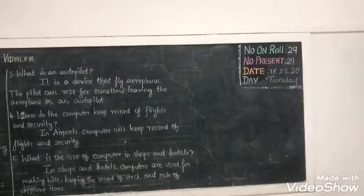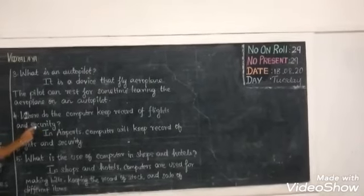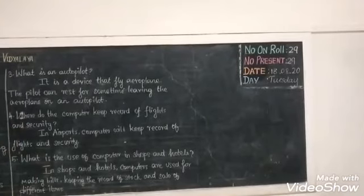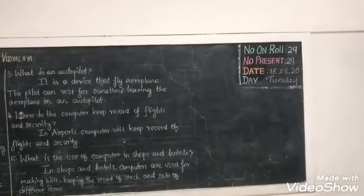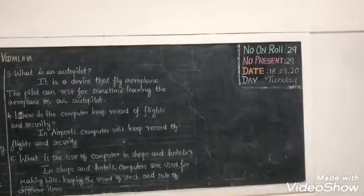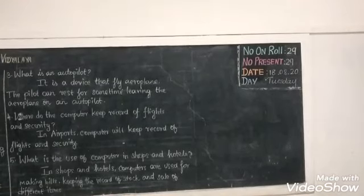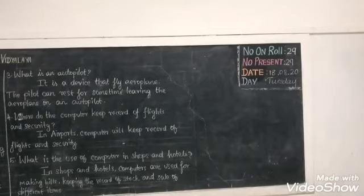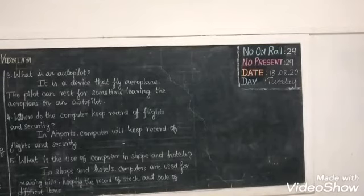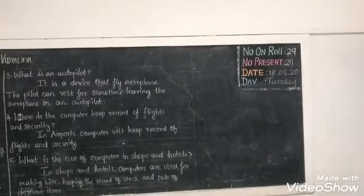The fourth question is: where does the computer keep records of flights and security? The flights and security records are maintained at the airport. They are keeping records of all the flights, and the airport maintains security. Flight details and passenger information — everything is maintained in records using the computer.